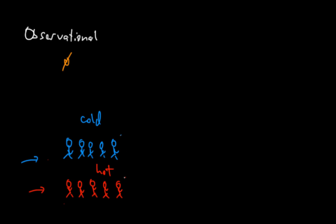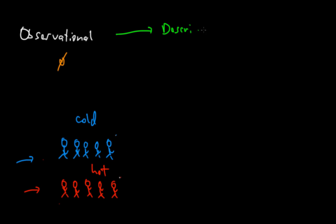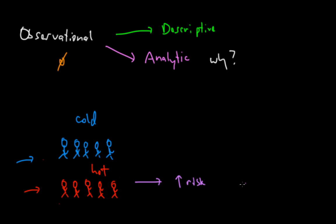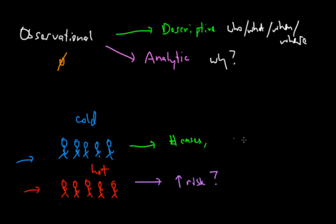Observational studies can be further broken down into descriptive studies and analytic studies. The difference comes down to what type of questions they answer. An analytic study answers the question 'why' — for example, why is there an increased risk of lung cancer in a population that lives in hot weather? A descriptive study, on the other hand, asks who, what, when, and sometimes where — for example, looking at the number of cases of lung cancer that appear, where they occur, or who they occur in, such as older versus younger people.